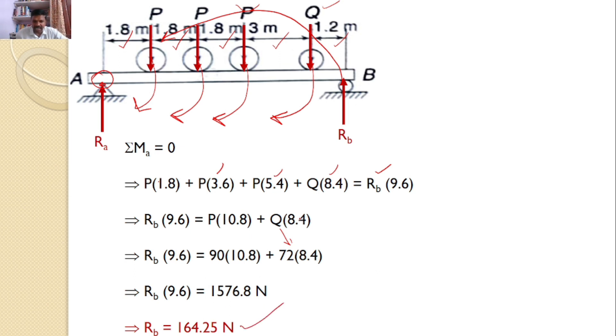And this I can substitute in equation 1 where Ra plus Rb equals 342. From that, I can find the value of Ra, which is 177.75 Newtons. So, this Ra and Rb are the answers for the given problem.